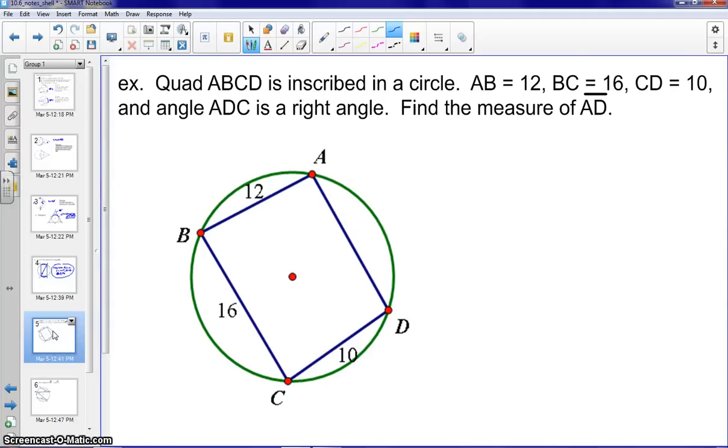Angle ADC is a right angle. We want to find the measure of AD. So I'll just call that X. Well, let's go ahead and draw in AC. Now, the question is, does that actually go through the center?